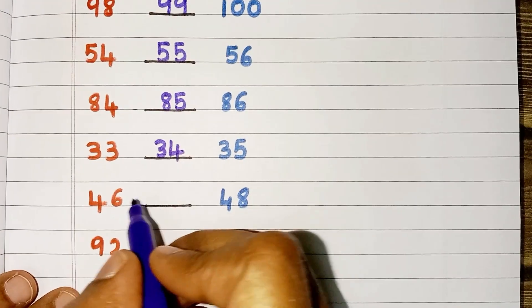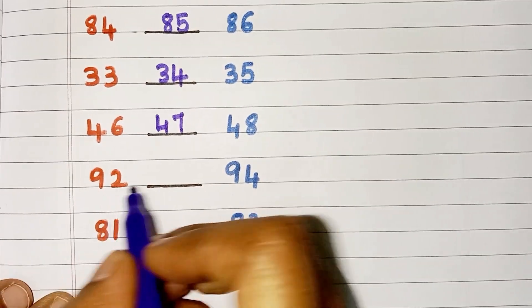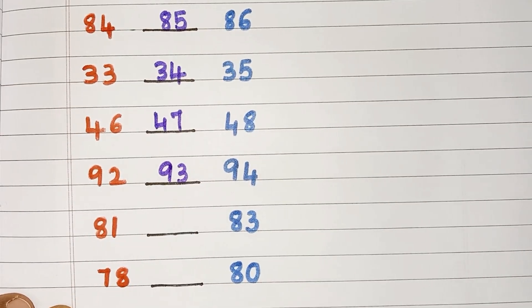Number between 46 and 48 is 47. Let's take 91, 92, 93, 94, 95.